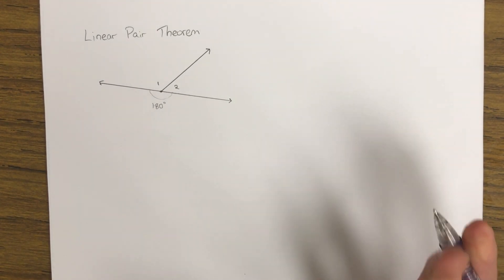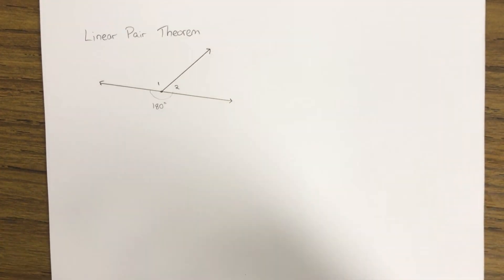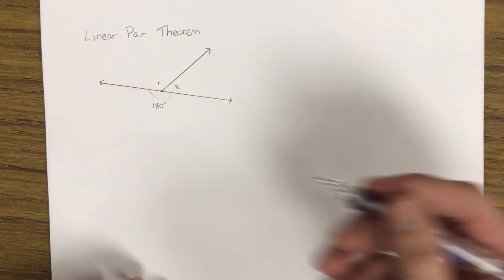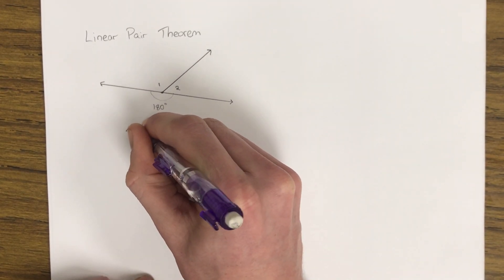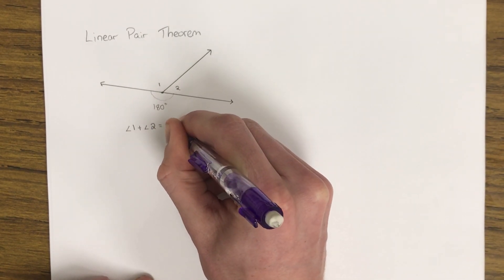And our angle addition postulate tells us that if we have two angles added together, their total value is just going to be equal to their sum. So we can say the linear pair theorem is going to be angle 1 plus angle 2 is equal to 180 degrees.